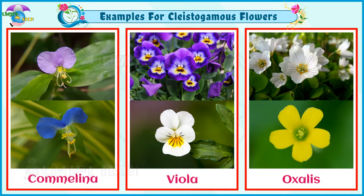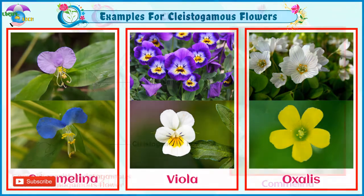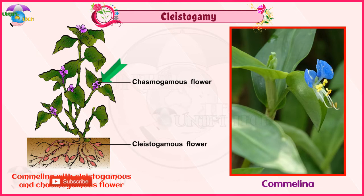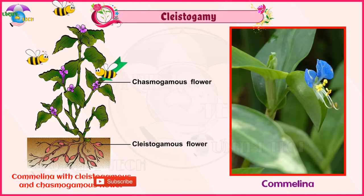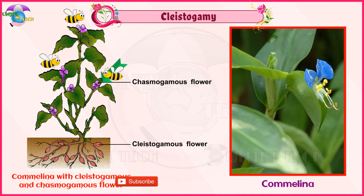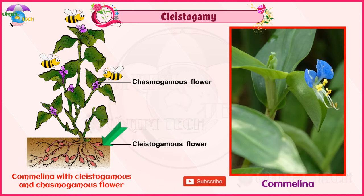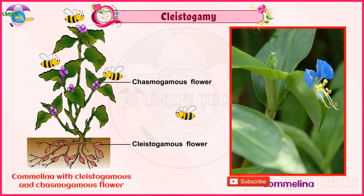An example of cleistogamy: in Commelina Bengalensis, two types of flowers are produced — aerial and underground flowers. The aerial flowers are brightly colored, chasmogamous, and insect pollinated. The underground flowers are borne on the subterranean branches of the rhizome, are cleistogamous and self-pollinated, and are not dependent on pollinators for pollination.